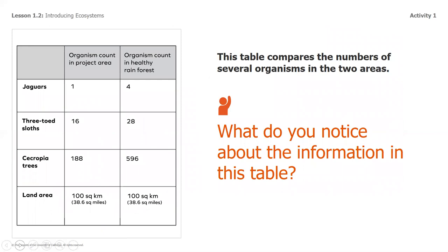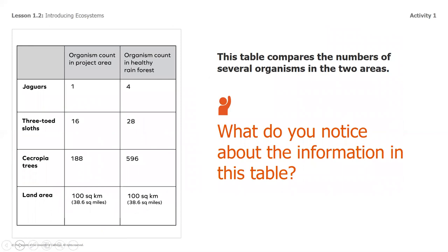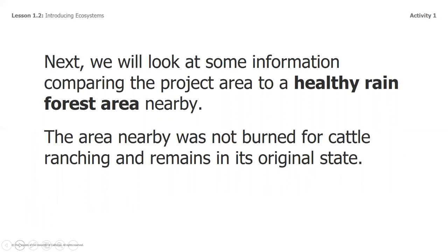Next we're going to look at some information comparing the project area to a healthy rainforest nearby. The area nearby was not burned for cattle ranching and remains in its original state. This table compares the numbers of several organisms — living things — in those two areas. When we're looking at data tables we have to notice and then wonder; we're not analyzing right away. The table shows how many jaguars, three-toed sloths, and Cecropia trees were found in the project area and in the healthy area nearby. What are you noticing about the information in this table?